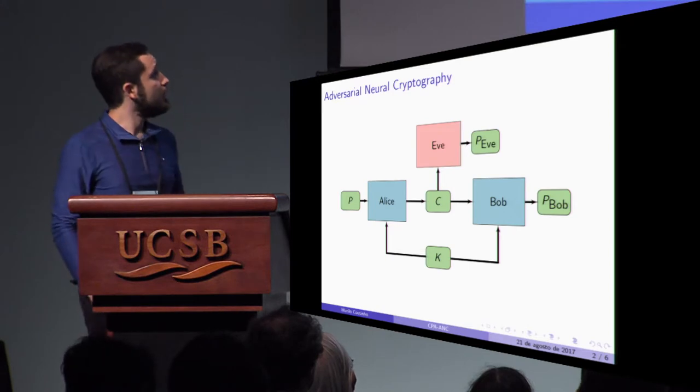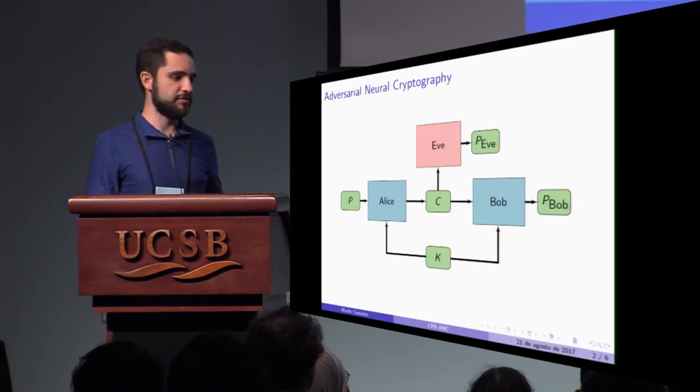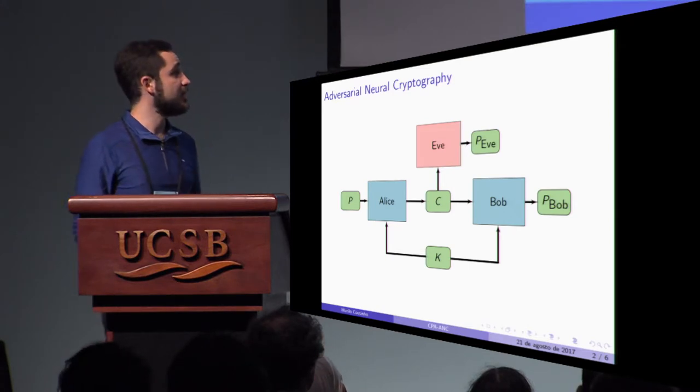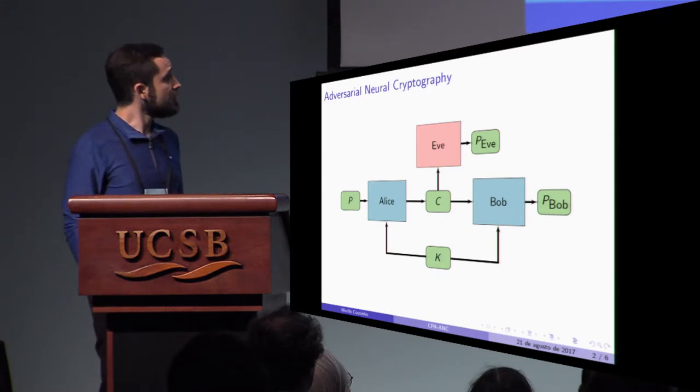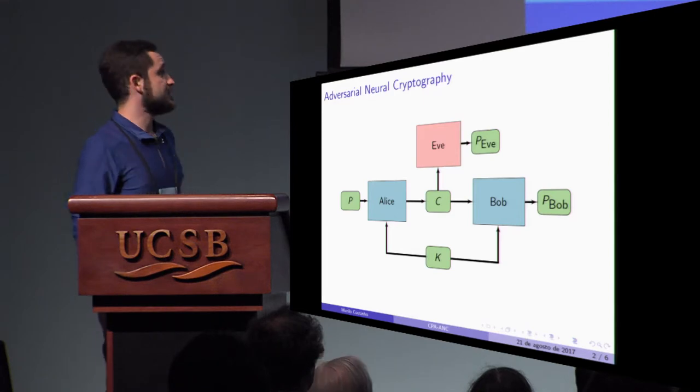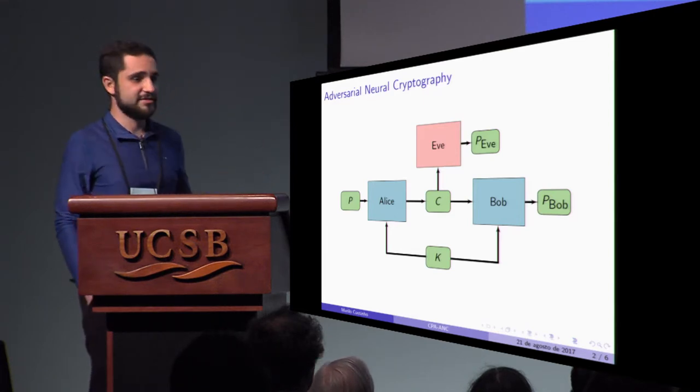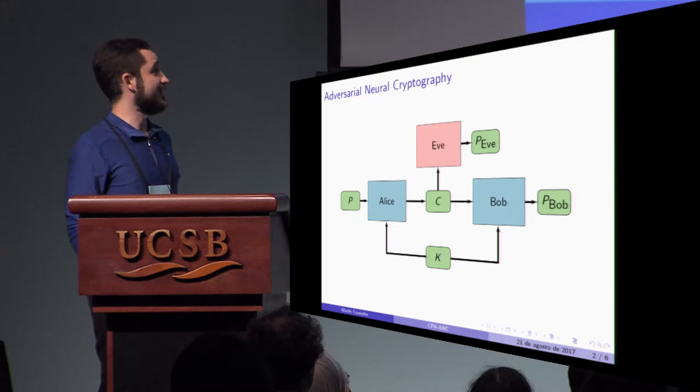And actually the neural networks did not learn the one-time pad. They learned a weak encryption scheme that was easily breakable. And of course, Eve could not break because it's just a neural network, it's not Shamir or anything.